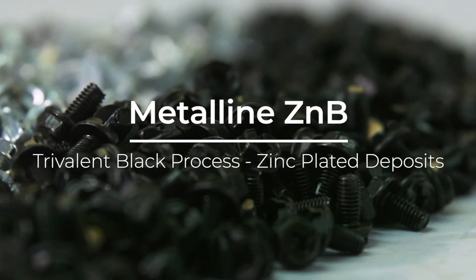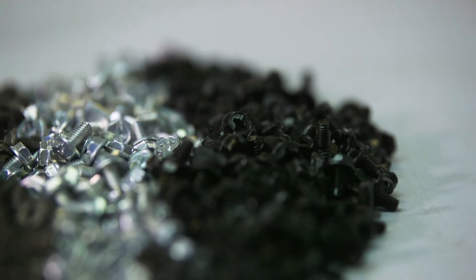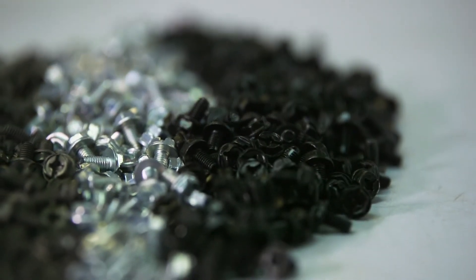The MetaLine ZMB Trivalent Black Chromate Process will produce a glossy deep black conversion coating over acid chloride zinc and alkaline zinc plated parts.